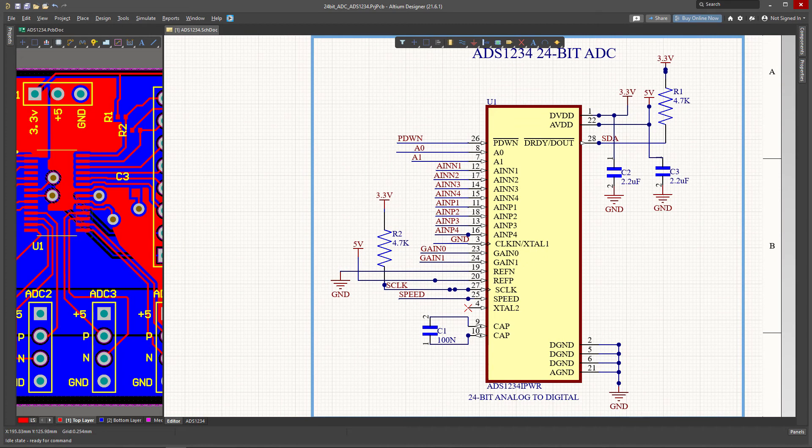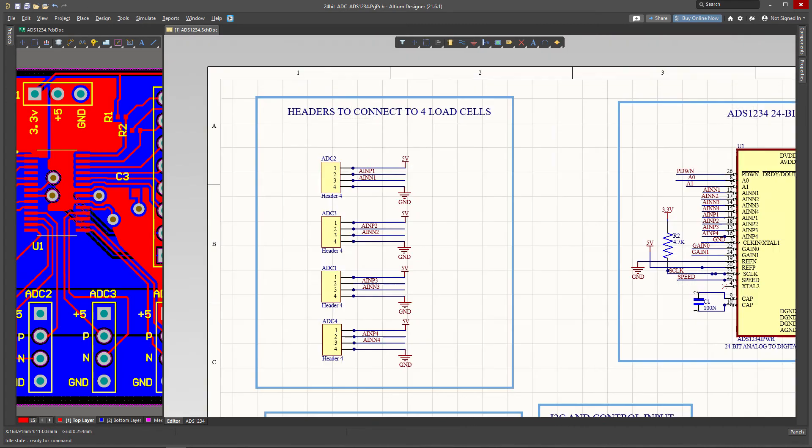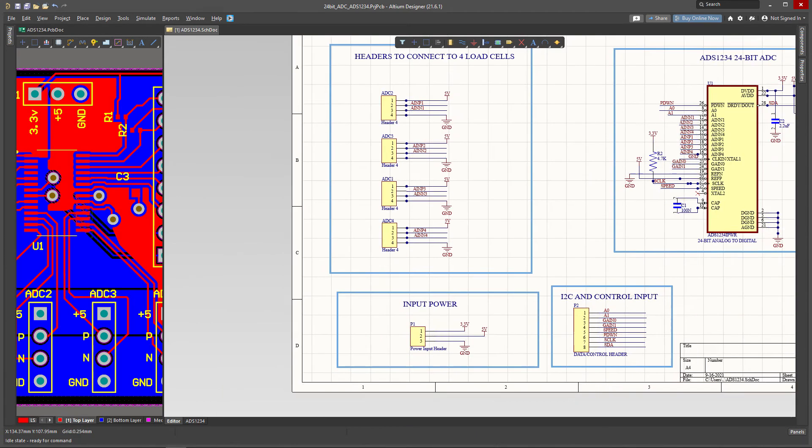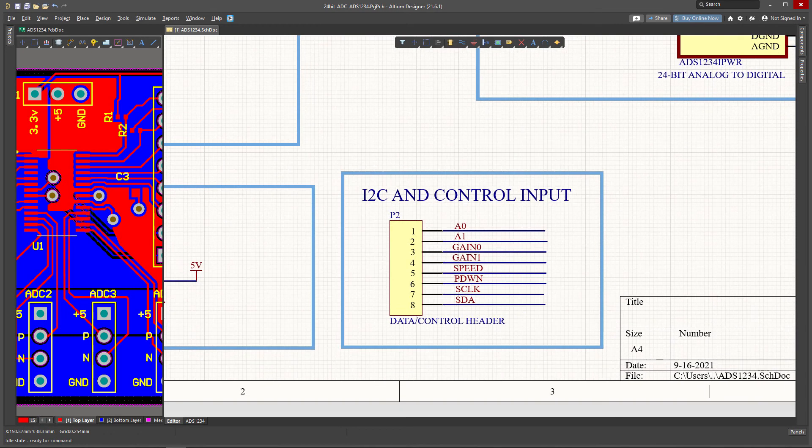This would be the headers for connecting the load cell. And here you have high level external ways of controlling how you want the component to function. So you can control it to the A0, A1, Gain 0, Gain 1, Speed, all measuring resolution, the speed of sampling and how sensitive you want your readings to be.